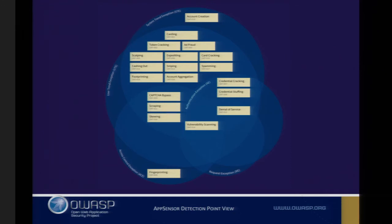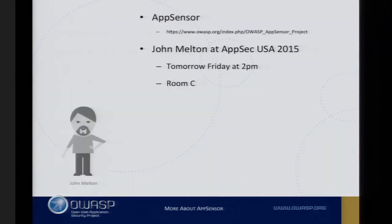Returning to one of my original questions — which detection points in the OWASP AppSensor project might be useful for looking for these things? It turns out that system trend exceptions and user trend exception type attack detection points are the things potentially of use for detecting these. Vulnerability scanning has quite a large overlap with lots of different categories in AppSensor. If you want to learn more about AppSensor, my colleague John Melton is speaking here tomorrow afternoon about the project, so do come along.